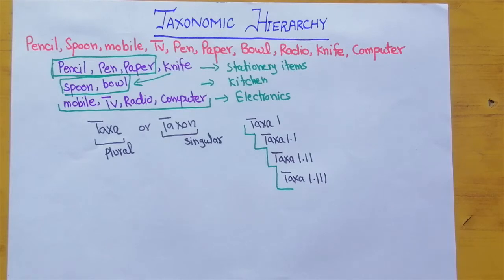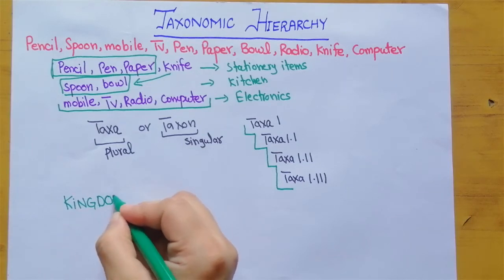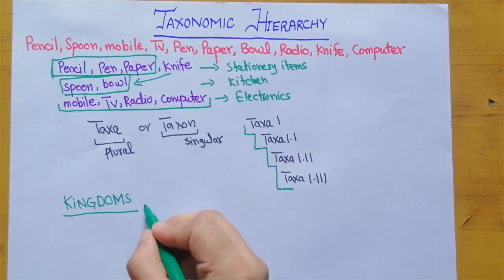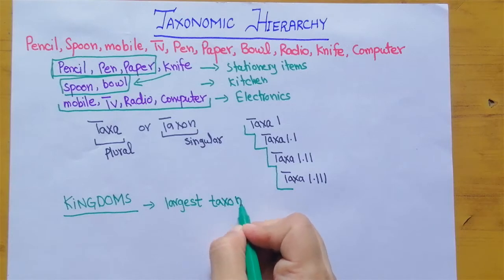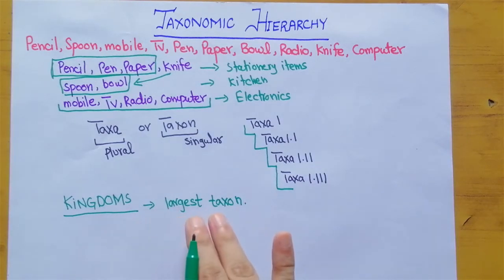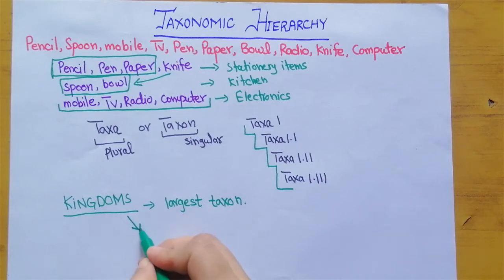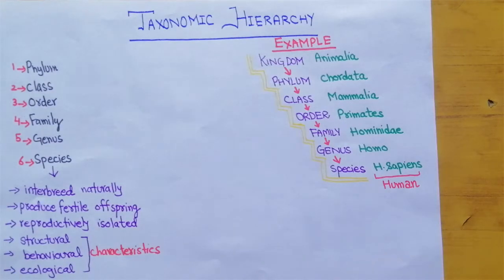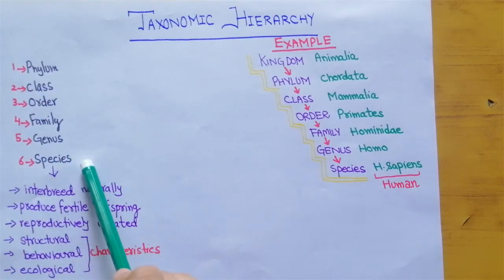In biology, all living things are divided into five kingdoms. Kingdom is the largest taxon. After the kingdom, there are several smaller levels. The levels after kingdom are: phylum, class, order, family, genus, and species.